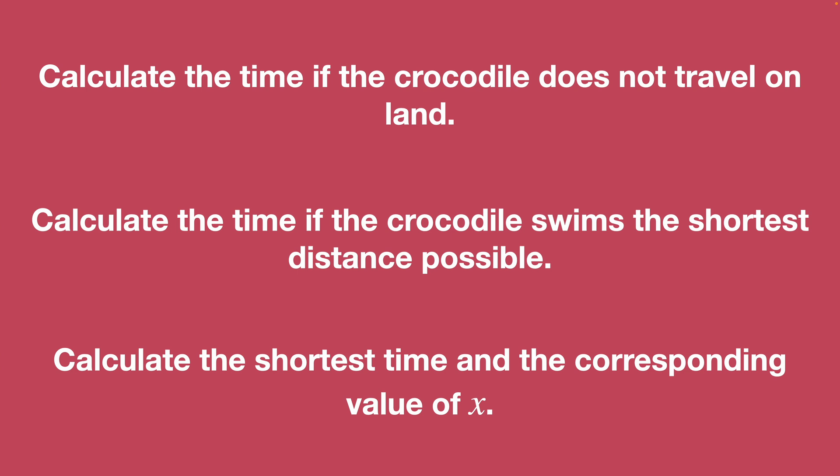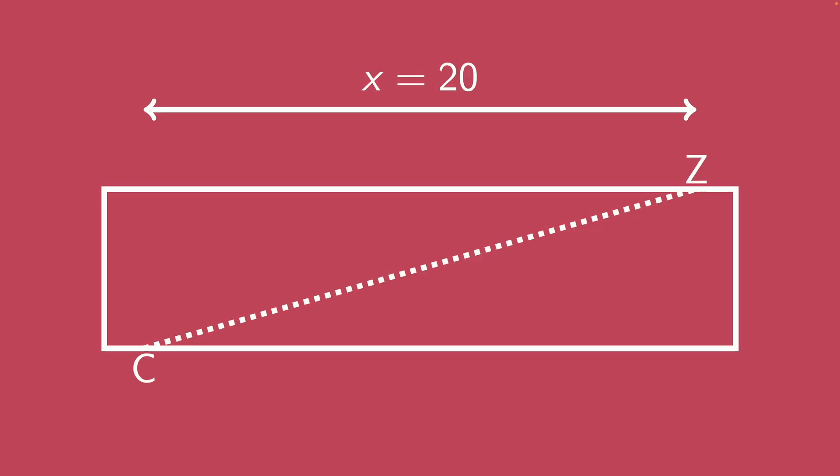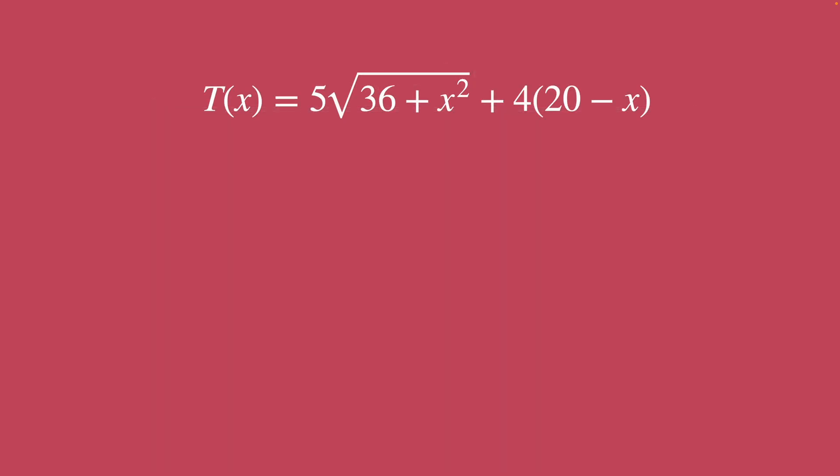So notice this first question is really just asking how long it takes if we swim the whole way there. Or in other words, if we just straight shot swim 20 meters upstream, like so. So our X is going to be 20. And then using that time equation that we had earlier, we just plug in X as 20 and we get T of 20 equals roughly 104.